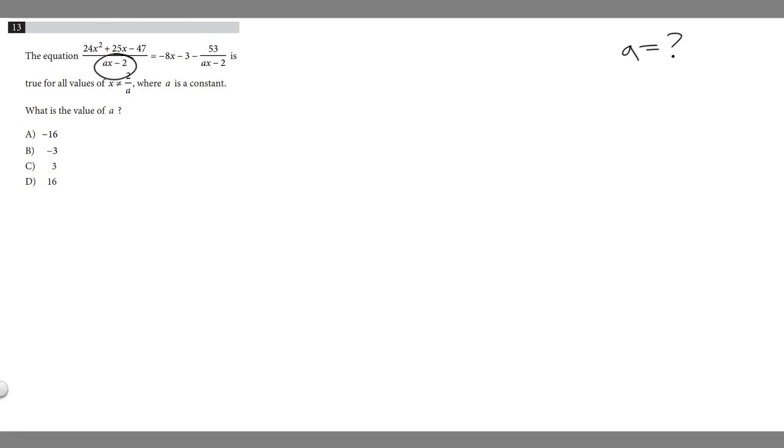So if we multiply ax minus 2 to both sides this one would cancel. So we would just have 24x squared plus 25x minus 47. But then we're multiplying this side by ax minus 2, right? So ax minus 2 times minus 8x minus 3 minus 53 over ax minus 2.